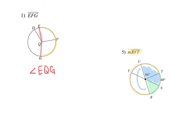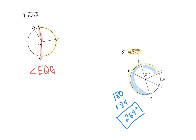For this one, you can either figure out what that piece is and subtract it, or add in the one little piece you need. I'm going to figure out which way I want to solve it. I know that this piece right here is half of a circle, so that part's going to be 180. The next part was given to me — 84. So I can take those two and add them. They wanted R to V all the way around to T, and that's what I gave them.